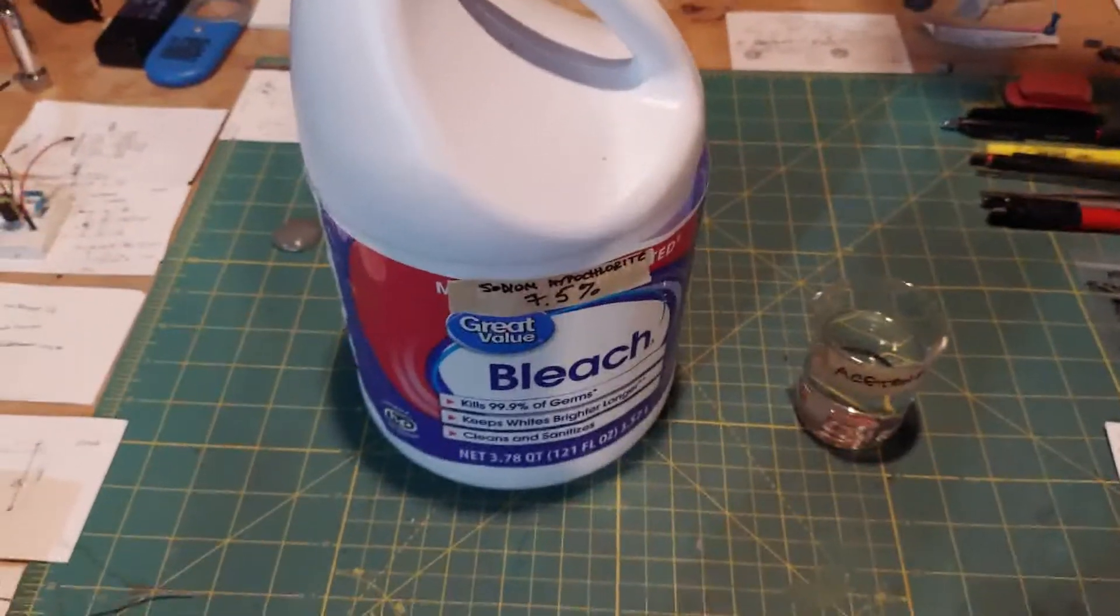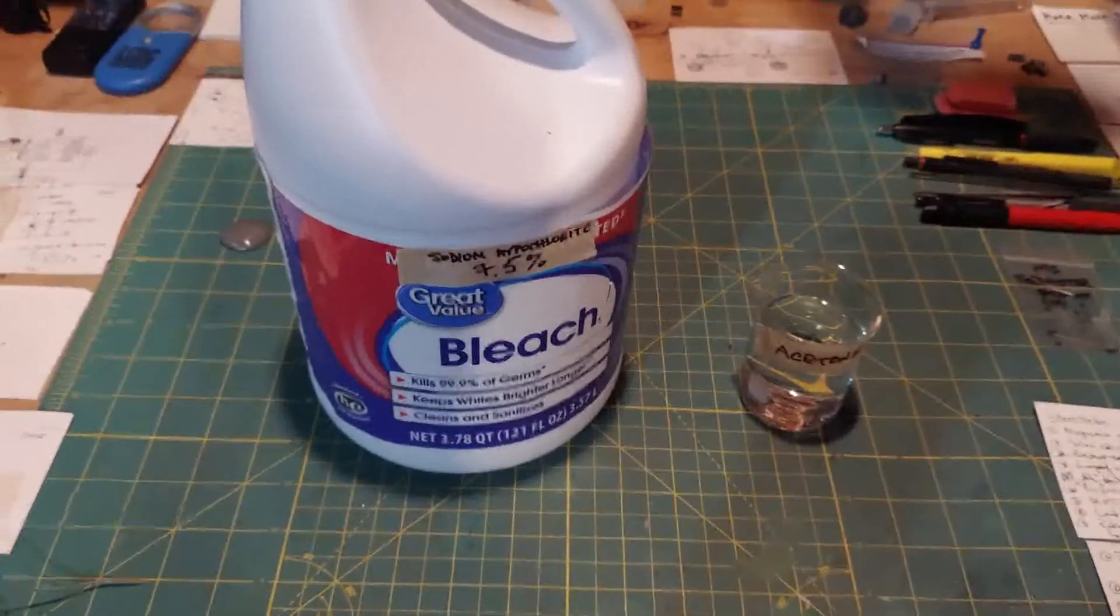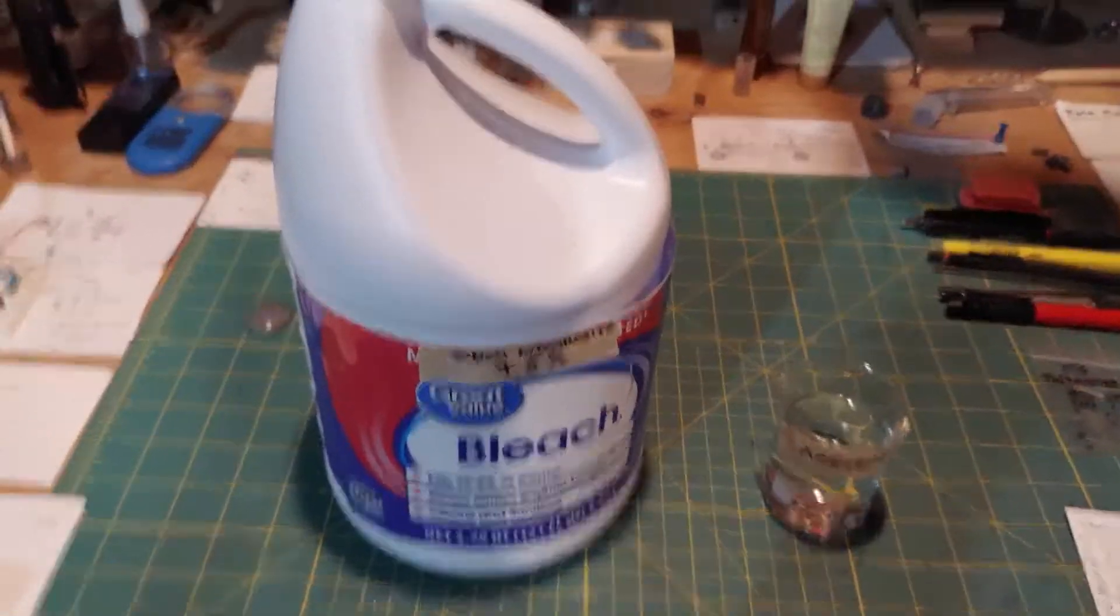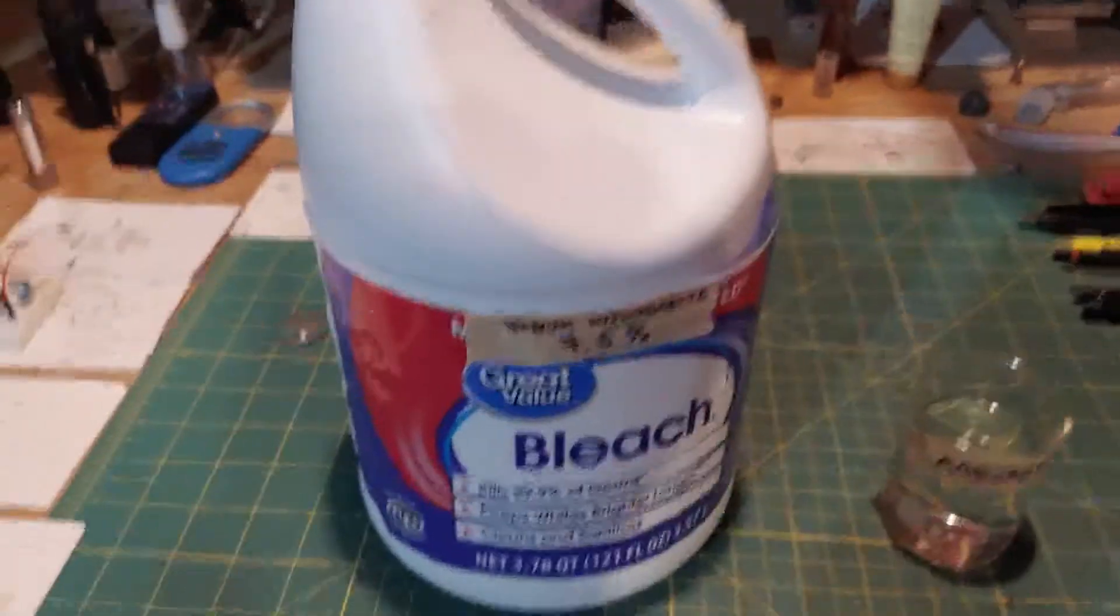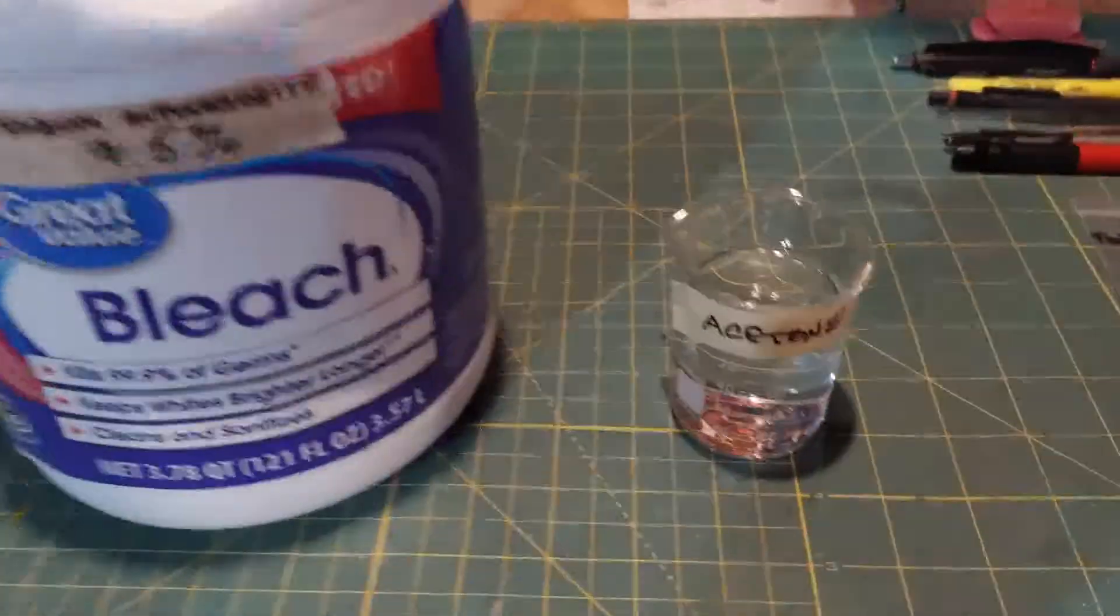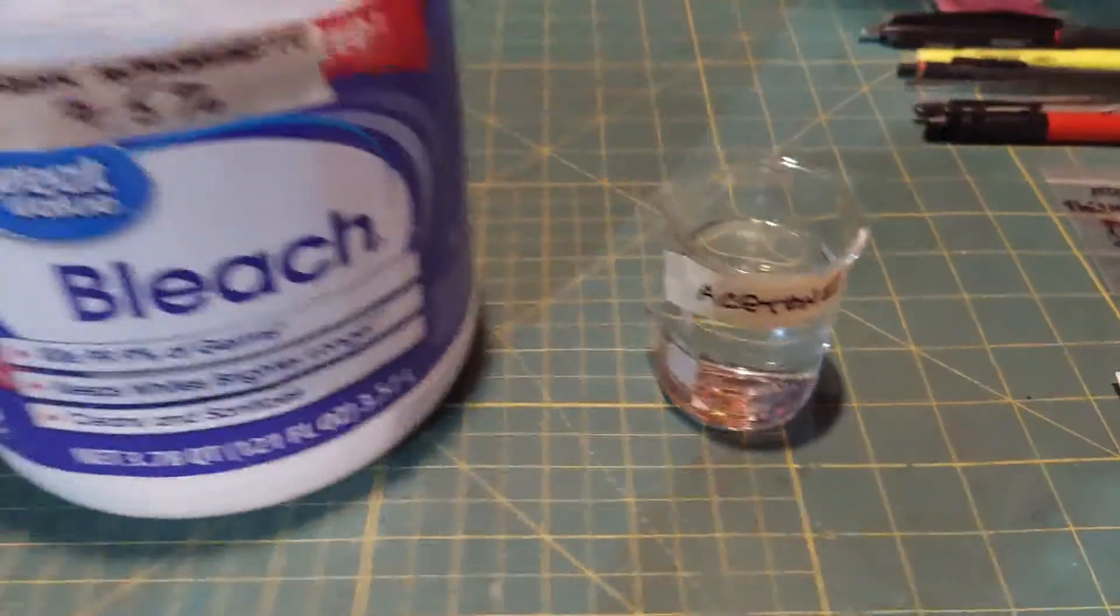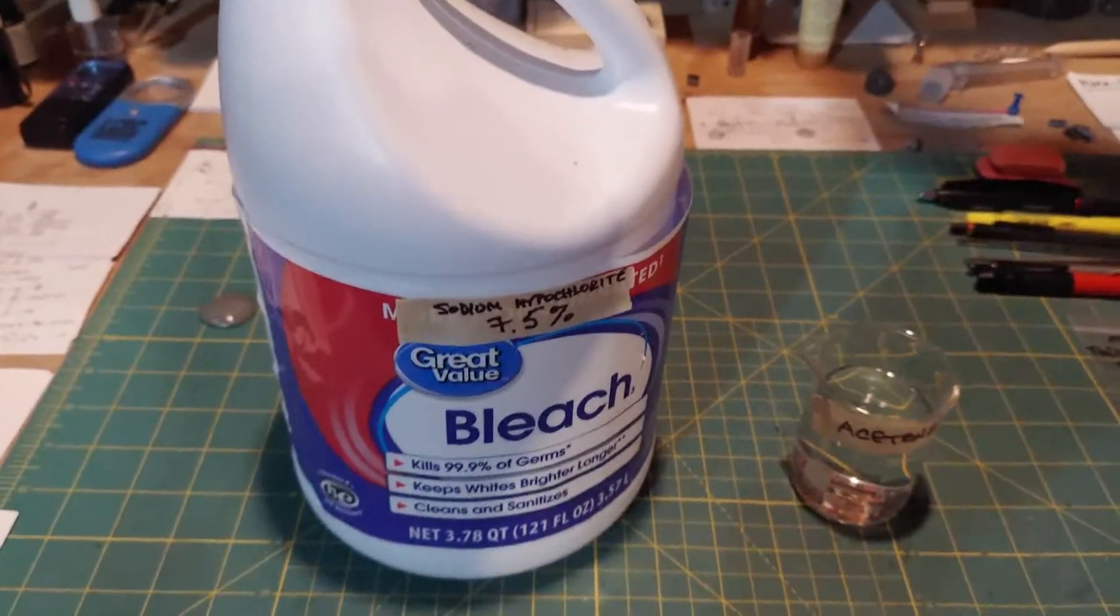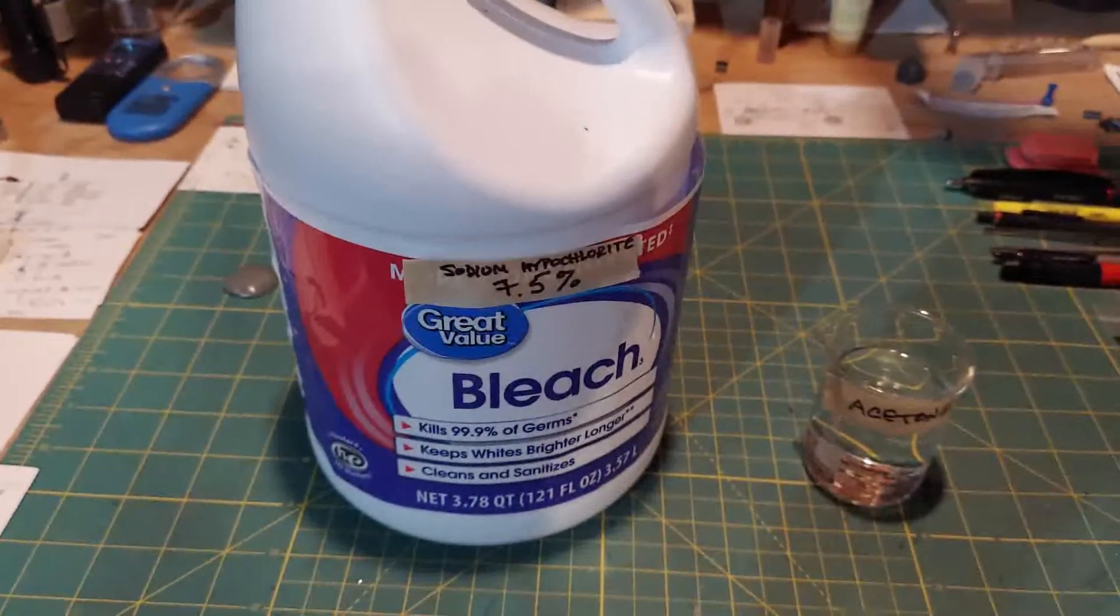Okay, we're about to make chloroform. Yep, the same stuff that they used to use, sometimes even on movies, to put people to sleep. And all you need is bleach - you can see Great Value, so that came from Walmart - and acetone. You can get acetone almost anywhere, like nail polish remover. A lot of that's just acetone.